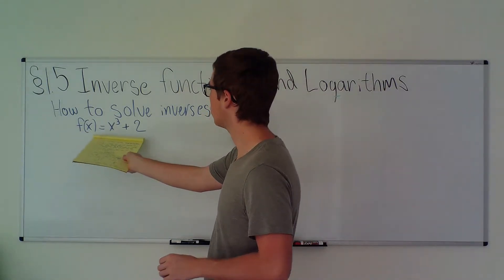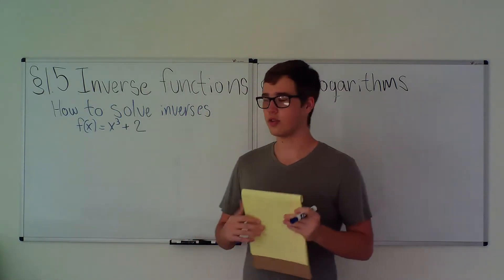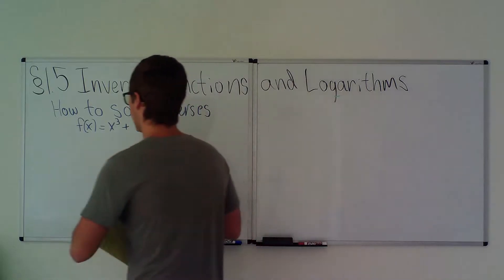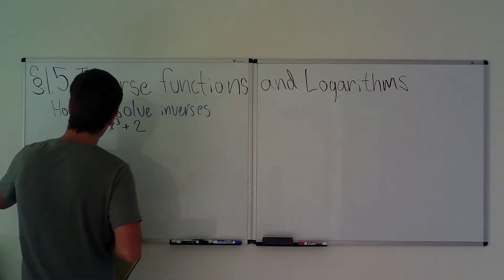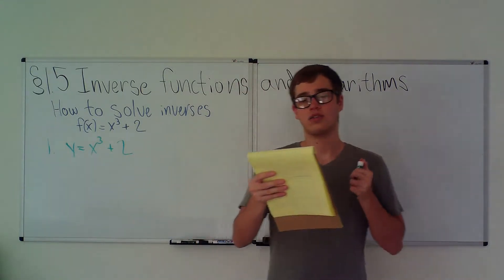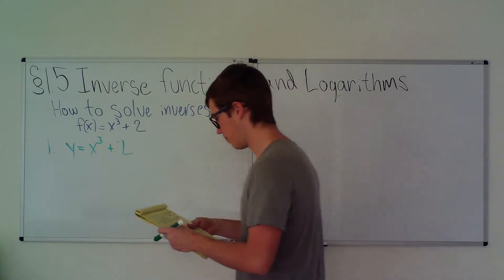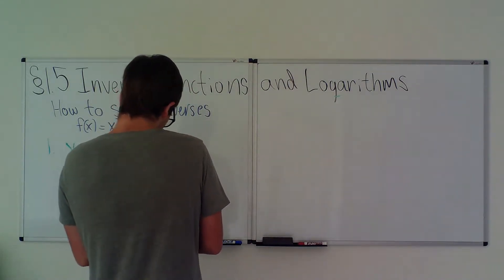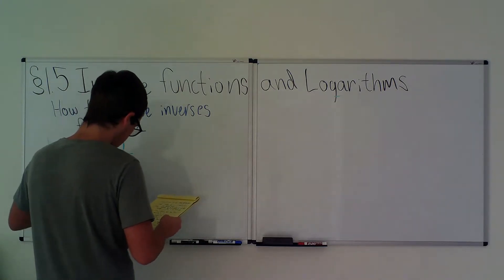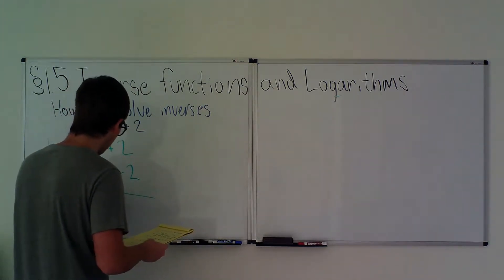We'll do this with the function f(x) = x³ + 2. Step 1: write y = f(x), so you set it equal to y — that's the easy part. Step 2 is the hardest part: solve for x in terms of y. So we get x³ = y − 2, therefore x = ∛(y − 2).